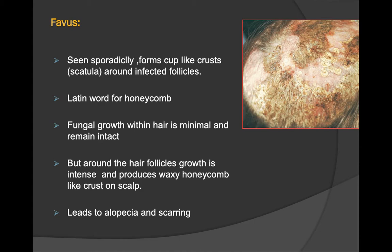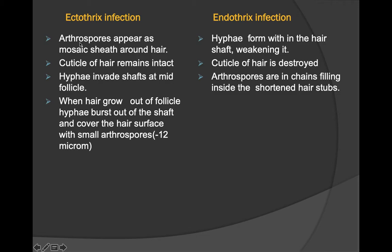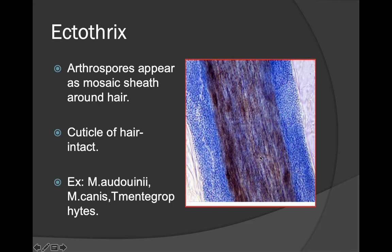In ectothrix infection, arthrospores appear as a mosaic sheet around the hair, whereas in endothrix infection, hyphae form within the hair shaft, weakening it. In ectothrix, the cuticle of the hair remains intact; in endothrix, the cuticle is destroyed. In ectothrix, when the hair grows out of the follicle, hyphae burst out and cover the hair surface with small arthrospores.